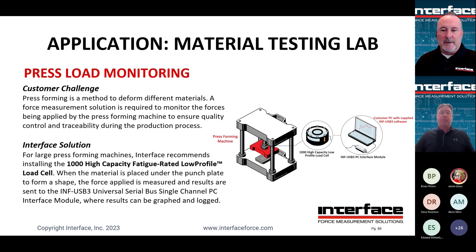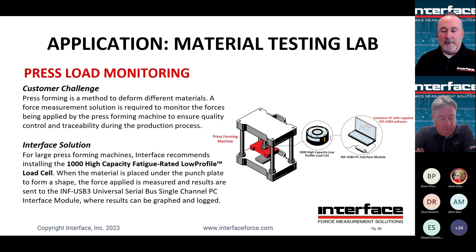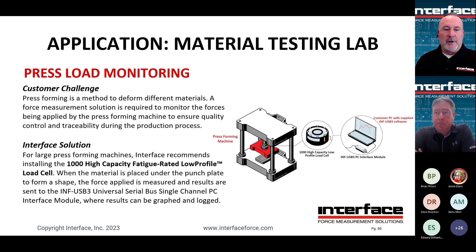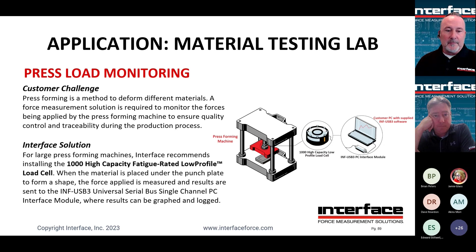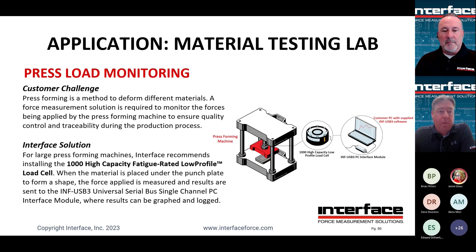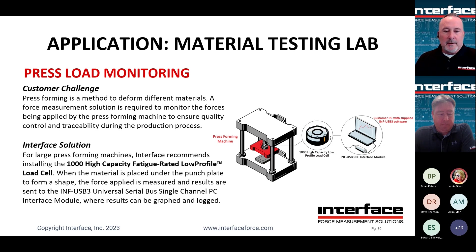We're going to run through some use cases here that are commonly found. Press load monitoring — it can be as simple as the customer needs to press a bearing onto a shaft, or maybe they're applying a forming machine. Very common to use a standard 1000 series high capacity fatigue rated load cell, since this machine is going to be used on a constant basis and you need that fatigue rating. Here we're showing it paired with an INFUSB3, sending the signal to a PC for graphing, logging, and storing.